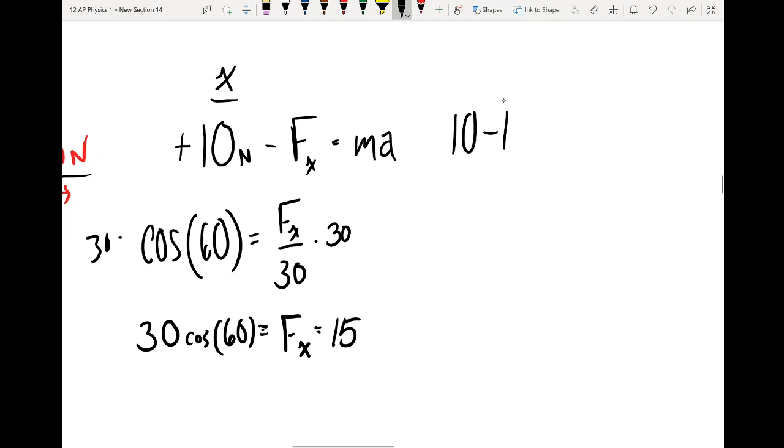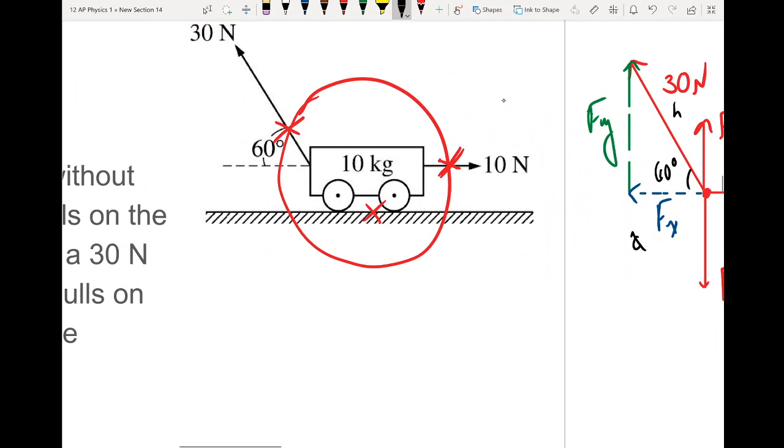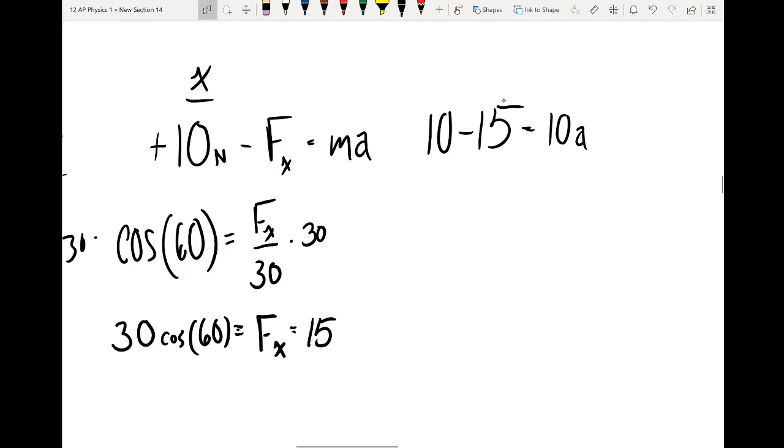10 minus 15 is equal to my mass was 10 kilograms times a, I think, right? 10 kilograms, yeah, 10 kilogram cart. So negative 5 is equal to 10 times a, a is equal to negative 0.5.